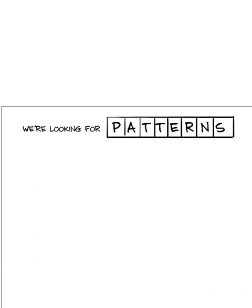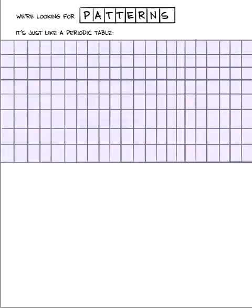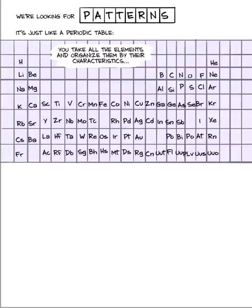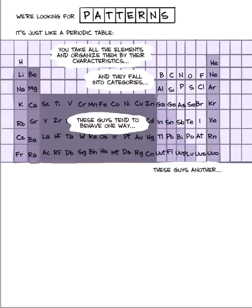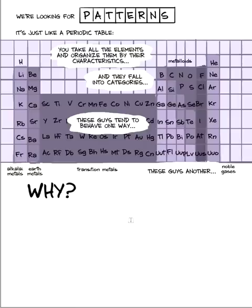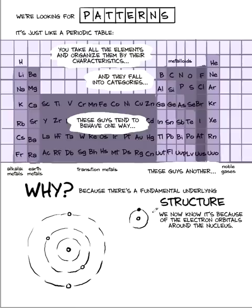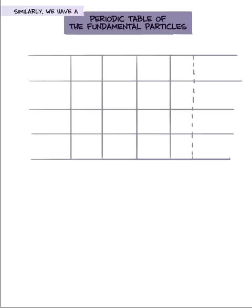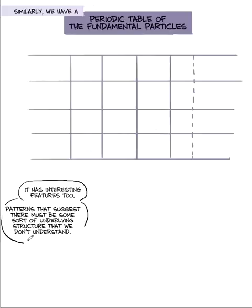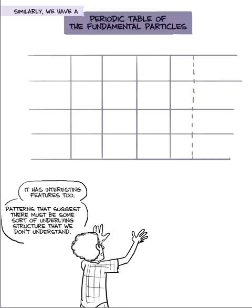We're looking for patterns. It's just like the periodic table. You take all the elements and you organize them by their characteristics and they fall into categories. These guys over here tend to behave one way. These guys tend to behave another way. Why? Because there's a fundamental underlying structure. Now we know it's just electron orbitals around nuclei. So we have a periodic table of the fundamental particles. And like the periodic table, we've been putting it together and trying to organize it by the characteristics of the particles. And it has some interesting features. It has patterns which suggest there must be some sort of underlying structure that we don't understand. But we haven't seen it yet.